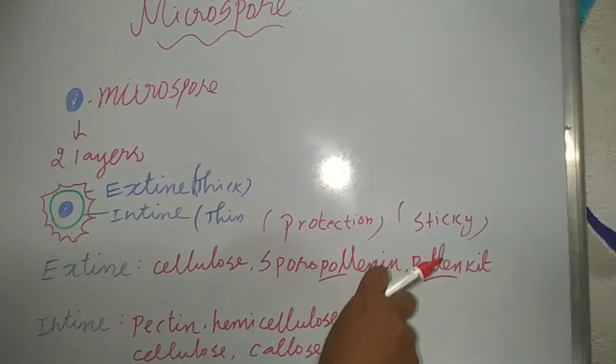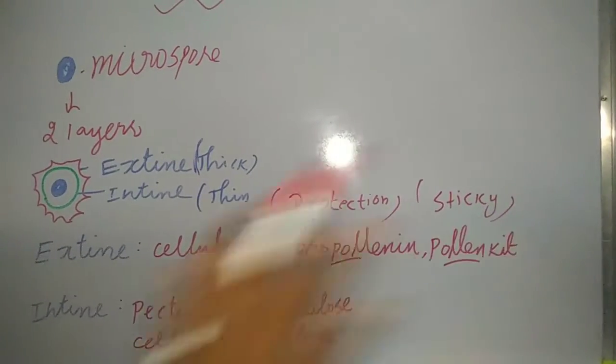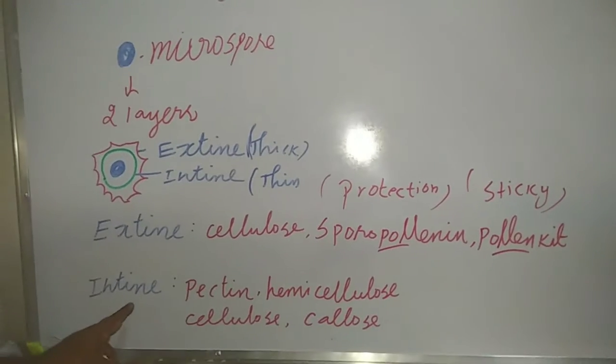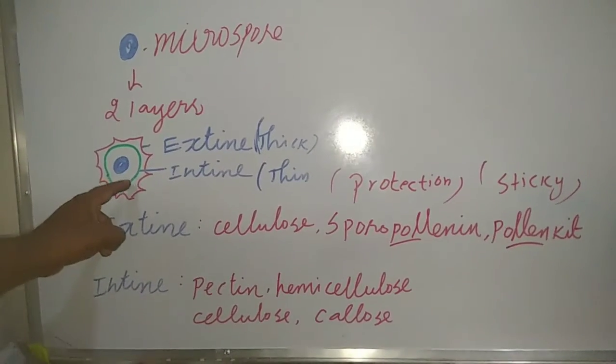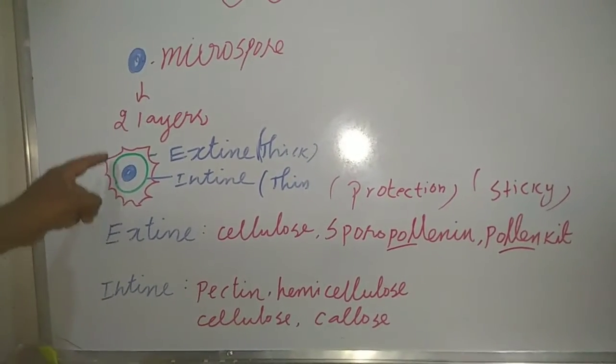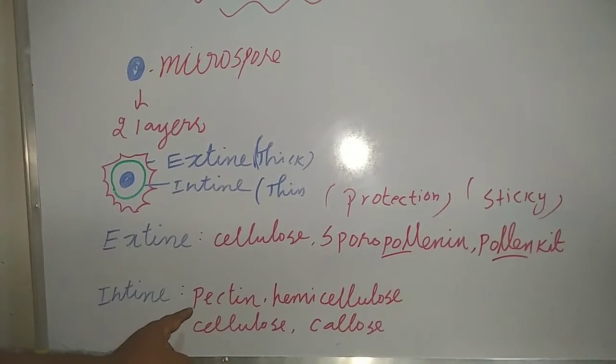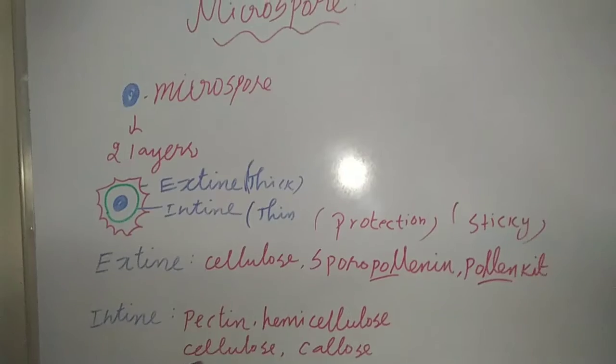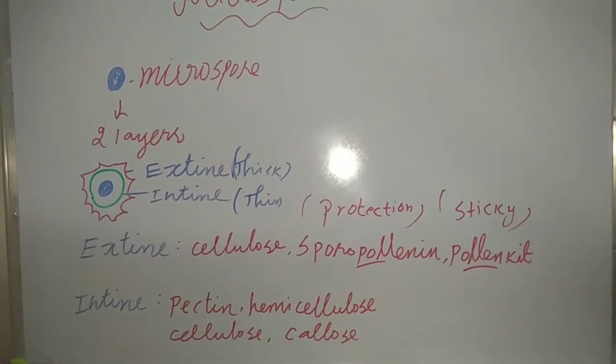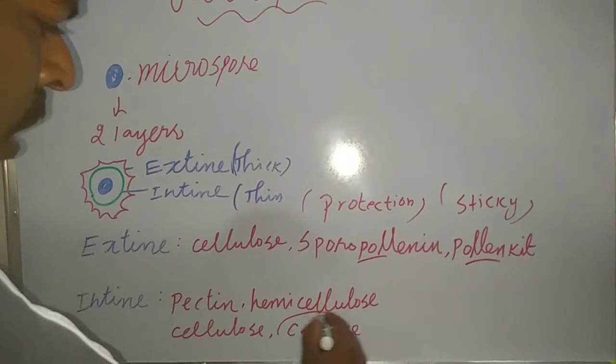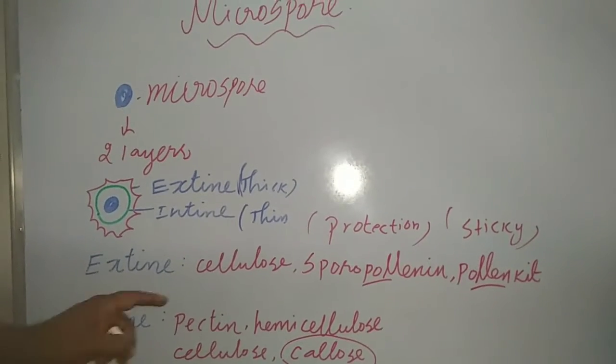The next one is intine. The intine is the inner wall, it is a very smooth wall. The exine is a rough wall. It contains other chemical components like pectin, hemicellulose, cellulose, and callose. Callose is one of the chemical substances.